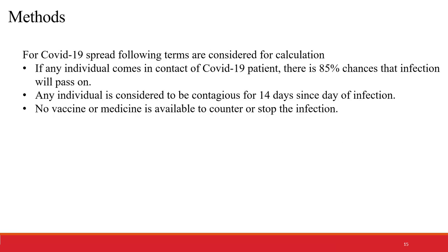For the calculation and prediction of COVID-19 cases for this project, the following terms are considered: If any individual comes in contact with a COVID-19 patient, there is an 85% chance that the infection will pass on. Any individual is considered to be contagious for 14 days since the day of infection. And as is obvious, we are assuming that there is no vaccine or medicine available to counter or stop the infection.